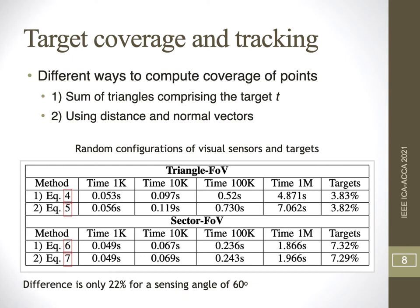There are different ways to compute the coverage of targets as points. In the paper, we describe four different methods. Using the sum of triangles, we consider the target as a vertex of three different triangles, and the sum of those triangles must equal the area of the original FOV — this method is already described in the literature. We also consider more elaborate methods using distance and normal vectors to indicate if a target has been viewed or not. For the performance evaluation, the triangle FOV once again took more time to execute a sequential high number of computations.